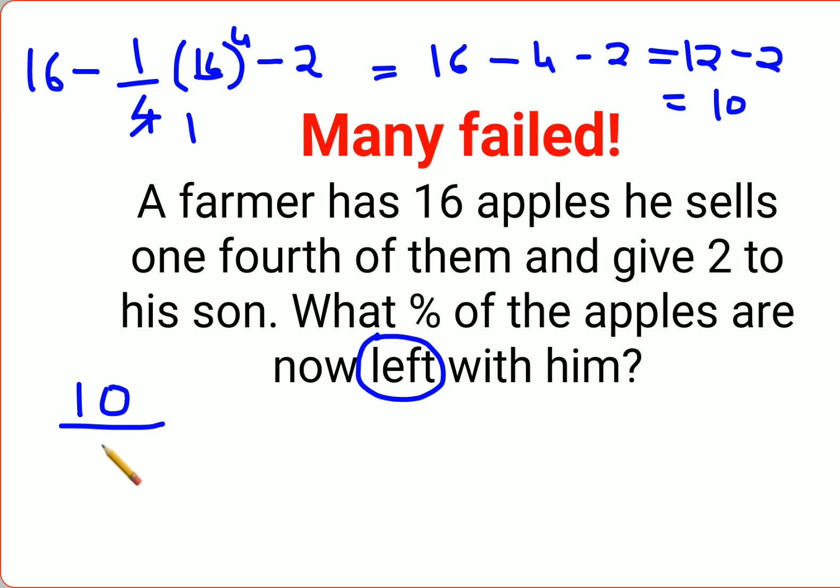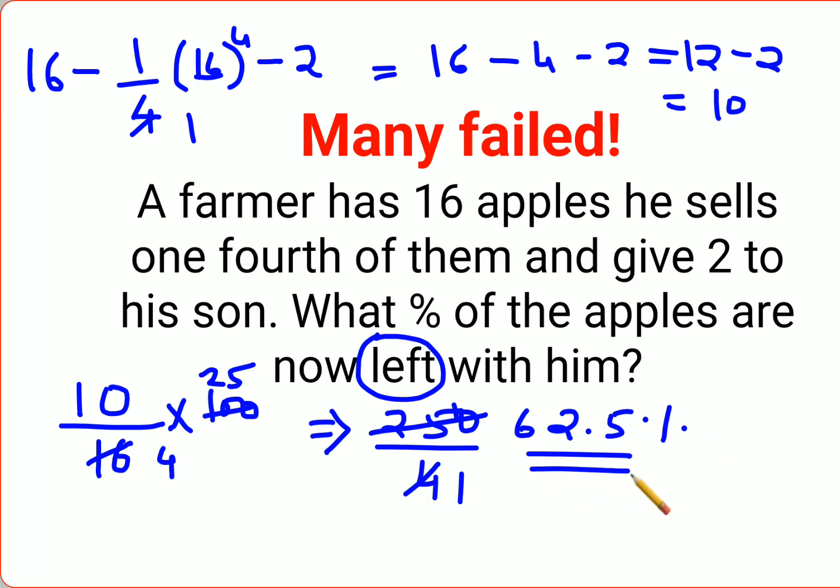to divide this value by the total, which is 16, times 100. So basically, 10/16 × 100. When you do this, you have 250/4. When you simplify this, you get 62.5 percent. This is the percentage of apples he has right now with him.